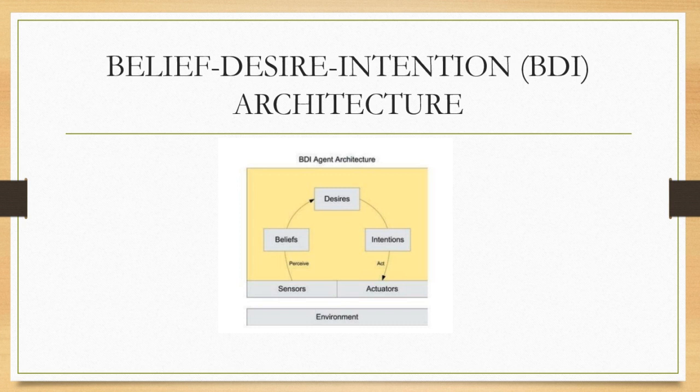BDI architecture follows the theory of human reasoning as defined by Michael Bratman. Belief represents the agent's view of the world. Desire defines the goals that motivate the agent. The agent may have numerous desires, which must be consistent. Finally, intention specifies that the agent uses beliefs and desires to choose one or more actions in order to meet the desire.